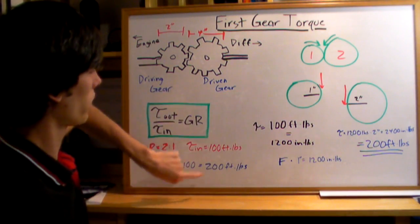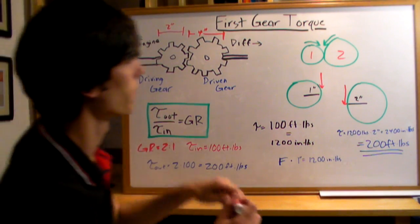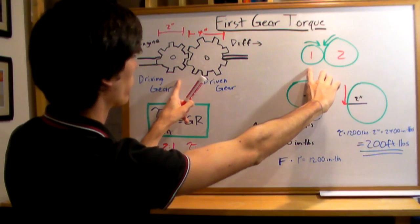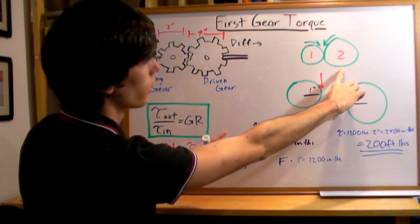Now where does this come from, this equation right here? If you've got two gears, here's the first one, the driving gear, and here's the second one, the driven gear.